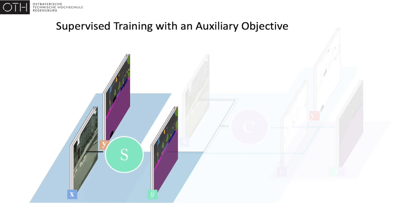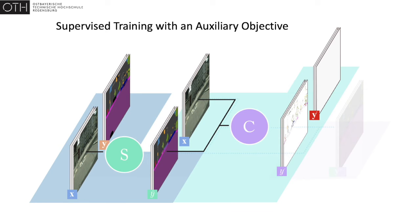Apart from a standard supervised objective, the primary segmentation network is constrained to generate outputs the corrector accepts as accurate.